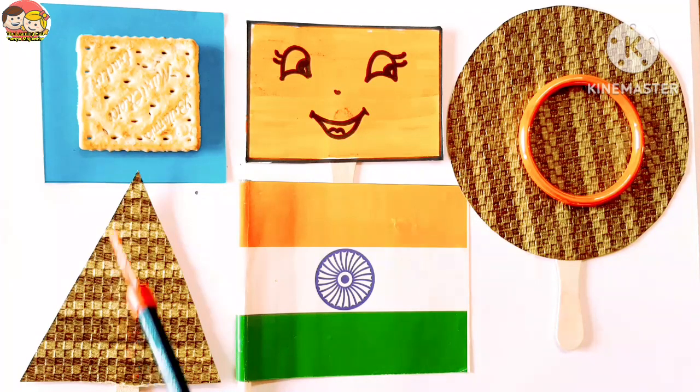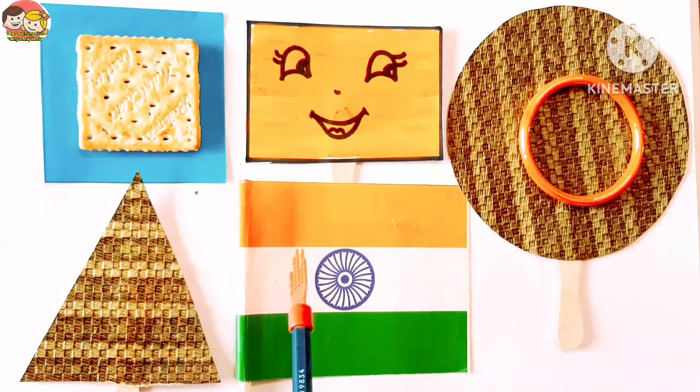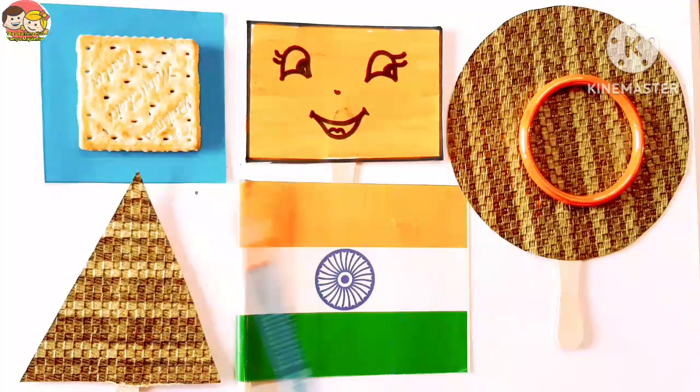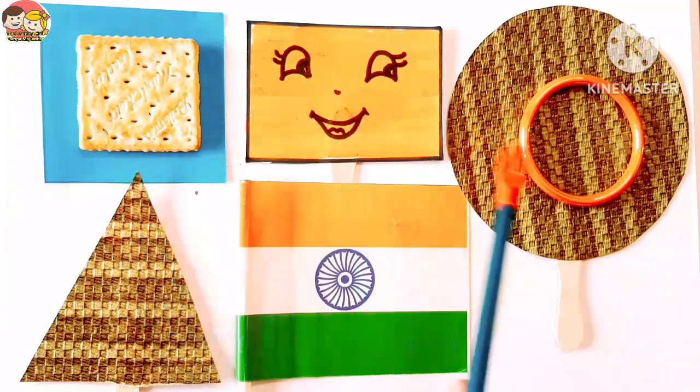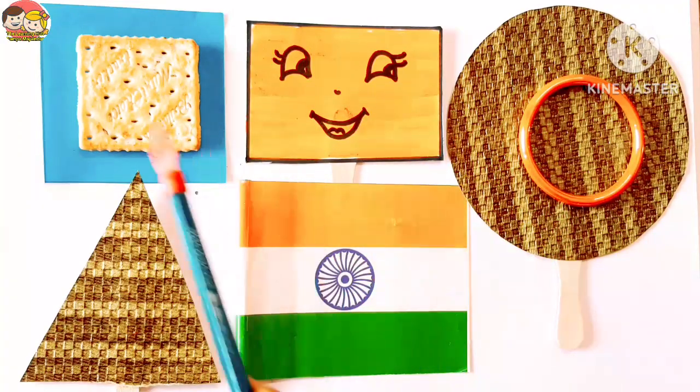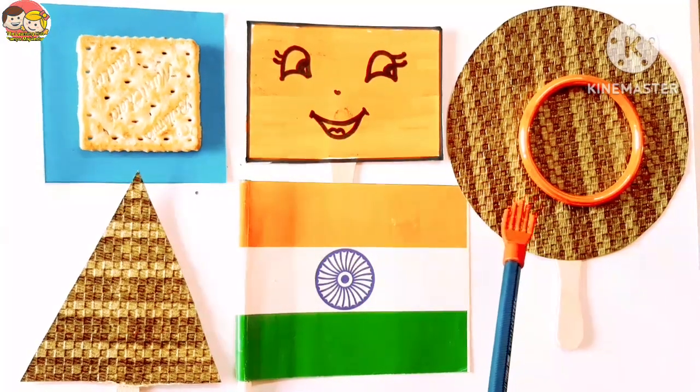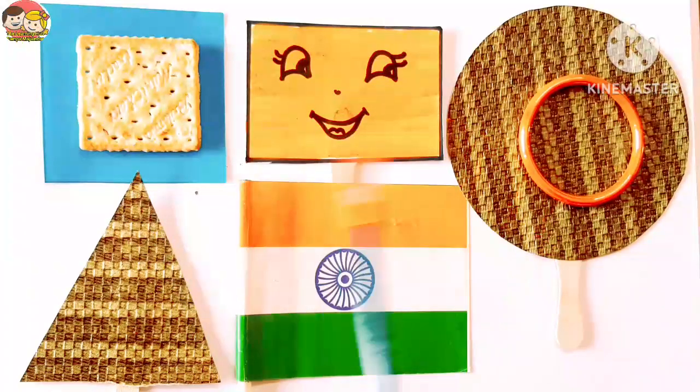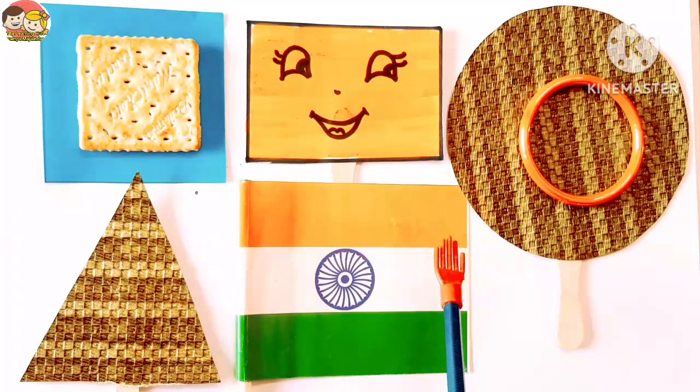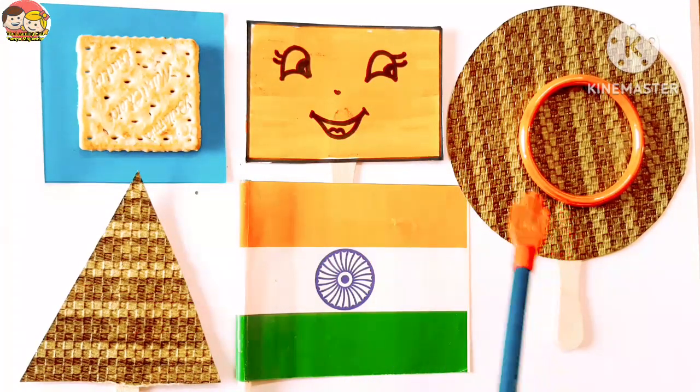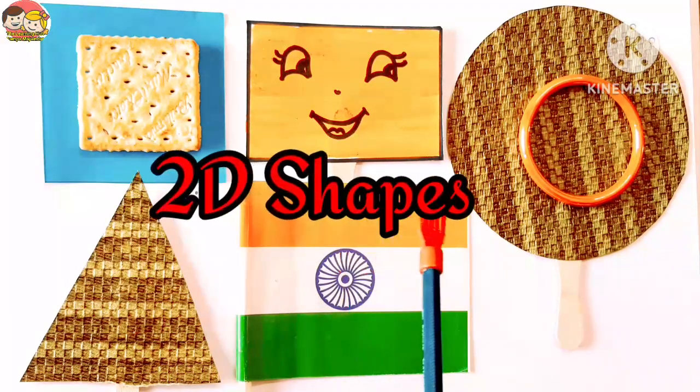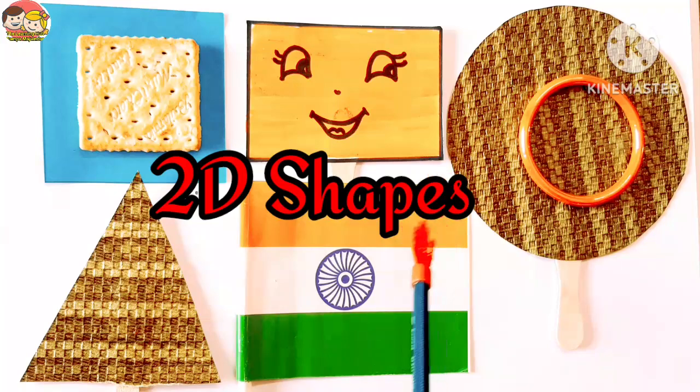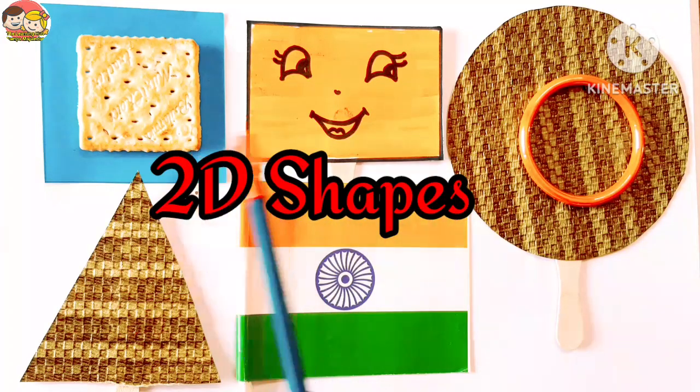In geometry, 2D and 3D shapes are explained extensively to make us understand the different types of objects around us that come in various shapes and sizes. Look here, there are different types of objects that have different shapes and sizes, so every shape has its own pattern and properties.